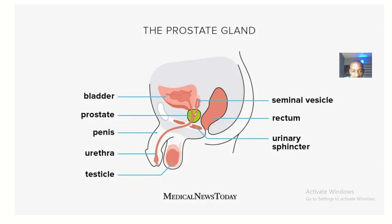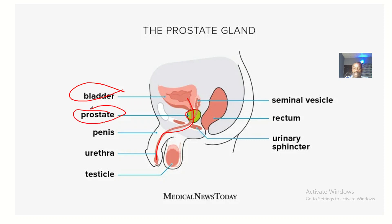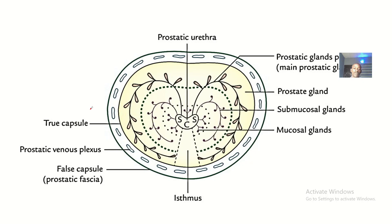Looking at this image right here, you can see that this structure up here is the bladder. Then from the bladder going down is the urethra, and there is a green structure here covering parts of the urethra. The part of the urethra covered by this structure called the prostate is actually called the prostatic urethra. So this is like a horizontal view — the prostate gland is caught in the middle — that's what we are looking at from up.